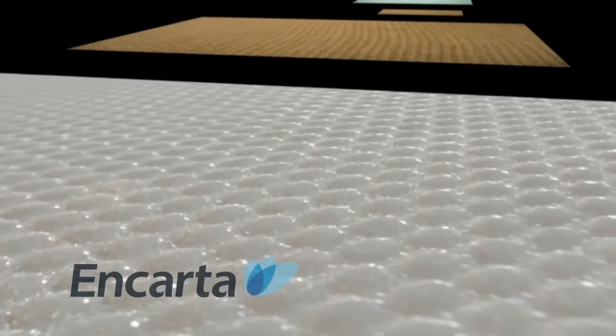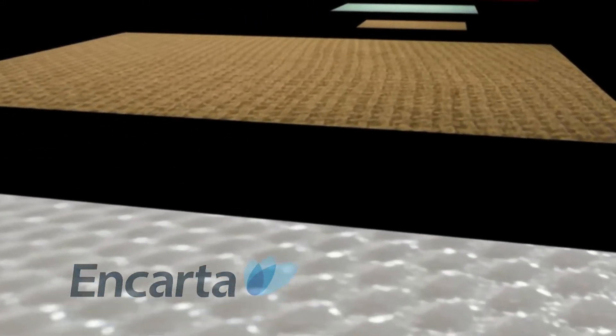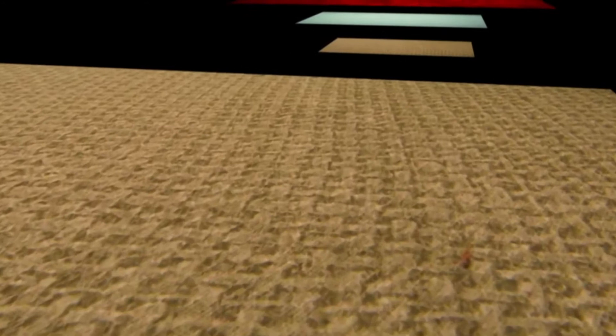Fabric, by definition in Microsoft's Encarta Encyclopedia, is any type of cloth made from woven, knitted, or felted threads or fibers.